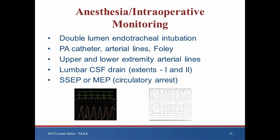After induction of anesthesia and insertion of a double lumen endotracheal tube, central access is obtained and a pulmonary artery catheter is inserted for hemodynamic monitoring. A Foley catheter is placed and arterial lines are inserted in both the upper and lower extremities to monitor both proximal and distal perfusion during aortic clamping in cases where left heart bypass is used. Lumbar cerebrospinal fluid drains are used routinely for extent 1 and 2 repairs, maintaining the intrathecal pressure at 10 mmHg or less. In the majority of cases, and especially in cases of extent 2 repair or those requiring hypothermic circulatory arrest, cranial and peripheral electrodes are placed for monitoring of somatosensory or motor evoked potentials to assess intraoperative spinal cord protection and perfusion.